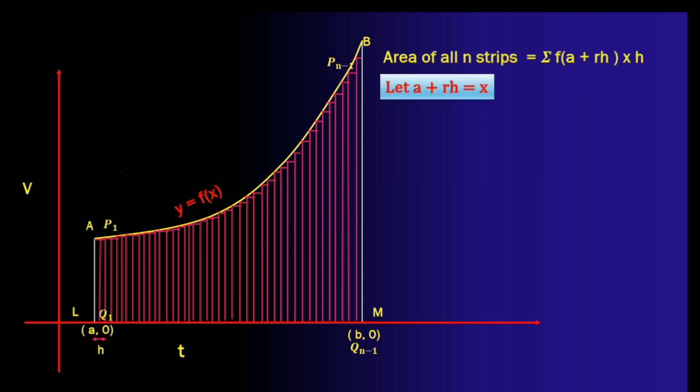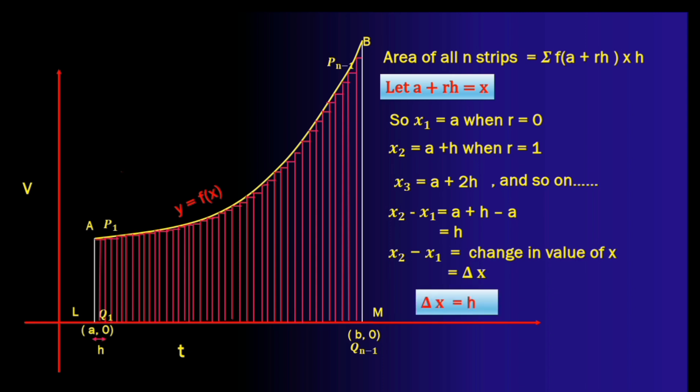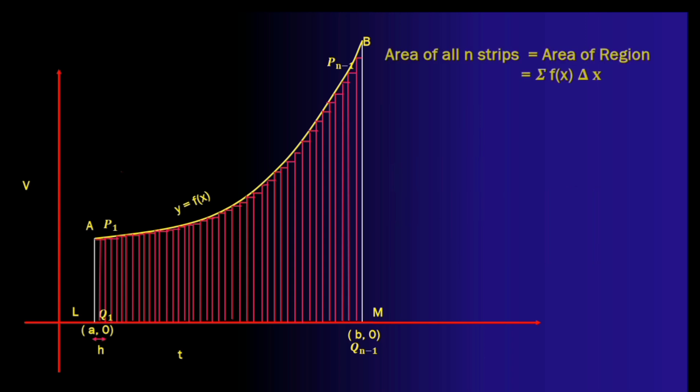Now to simplify things a little bit let's take a plus rh to be x. So when I put r as 0, x1 is going to be a. When I put r as 1, x2 will be a plus h and so on. So what will be x2 minus x1? Yes it will be h itself that is the thickness. But what is x2 minus x1? Yes it is the change in the value of x and change is always denoted by delta. So x2 minus x1 is delta x which means my thickness or h is going to be delta x. So let's replace h with delta x and this is the new expression that we get.